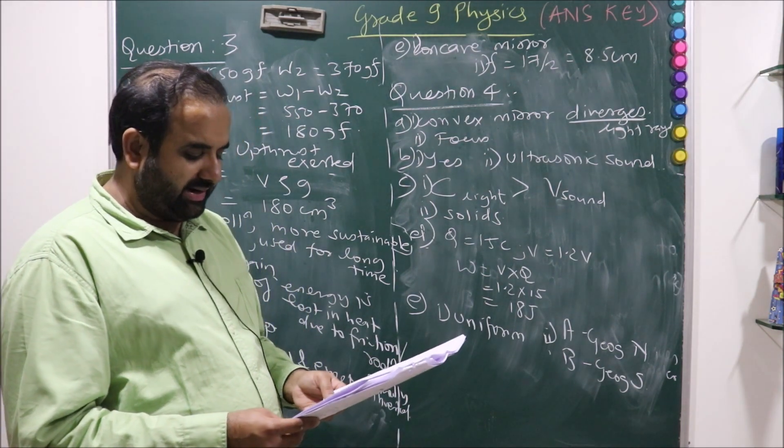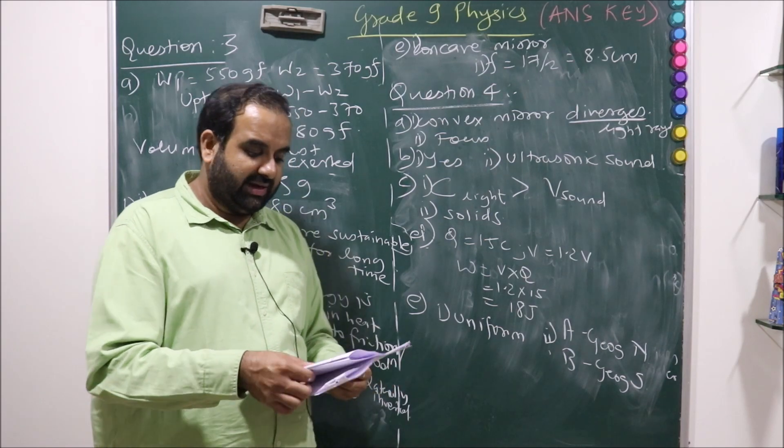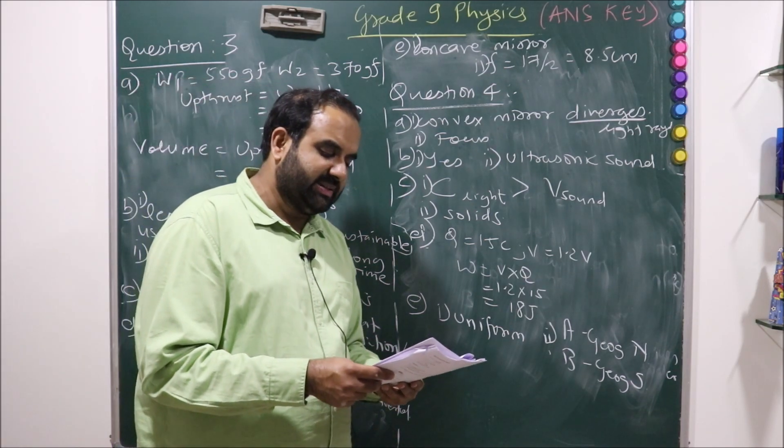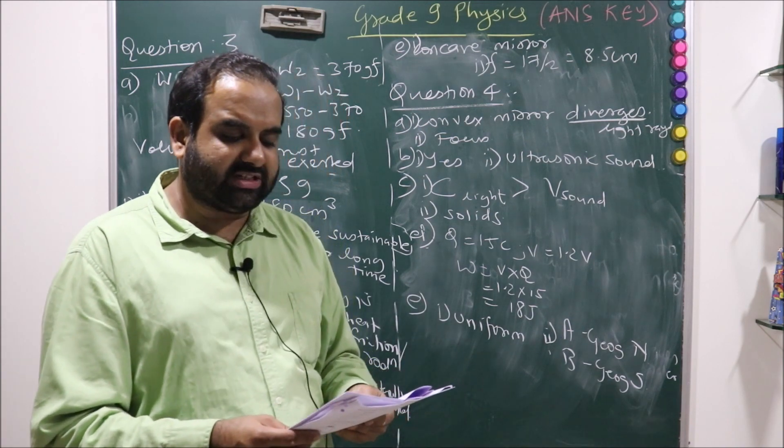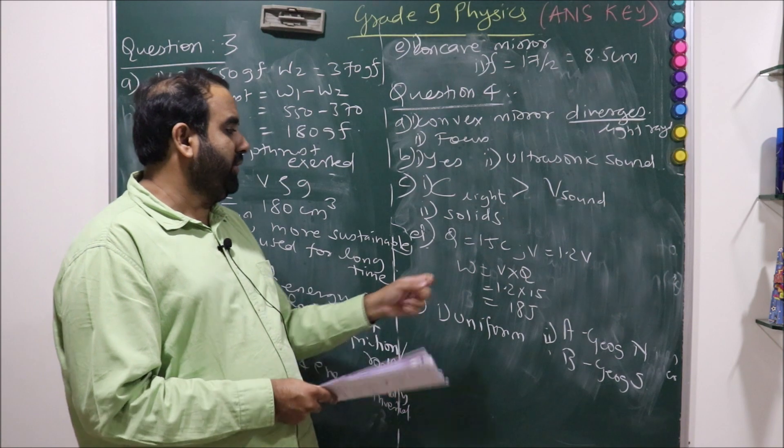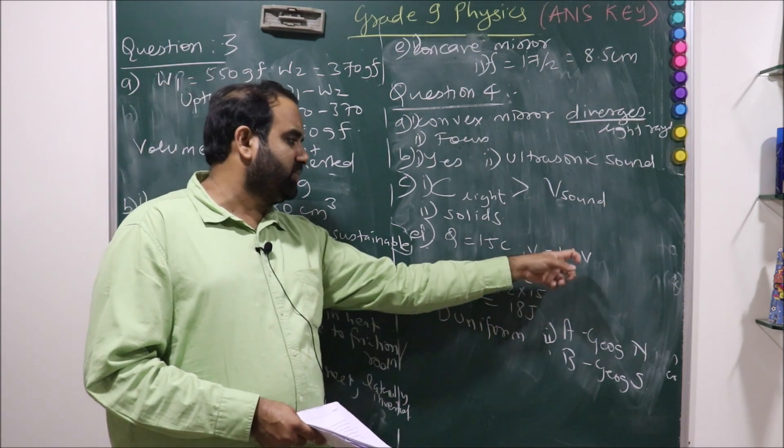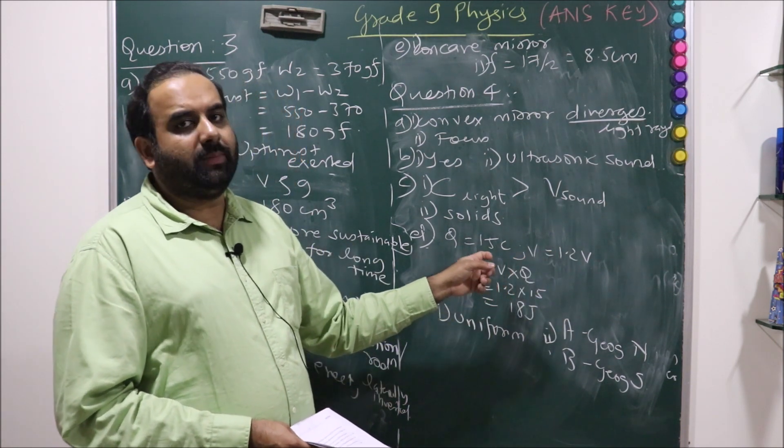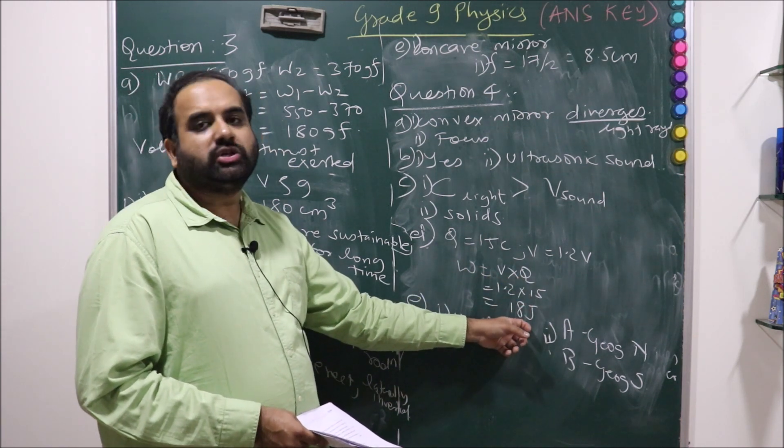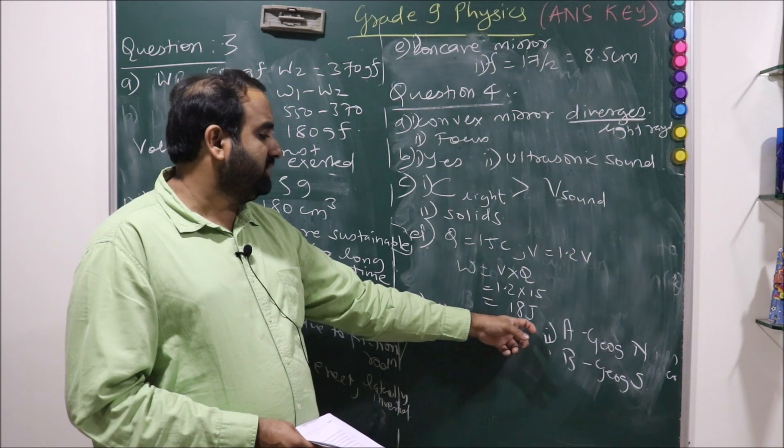Amount of work done in moving a charge of 15 coulomb between two points kept at a potential difference of 1.2 volts. Q is 15 coulomb, V is 1.2 volts. We know the formula V is nothing but W upon Q, so W equals V into Q. Simply substitute and solve for the answer. You will get 18 joules.